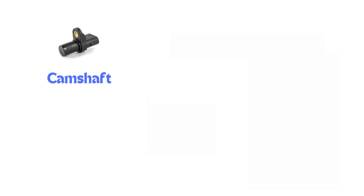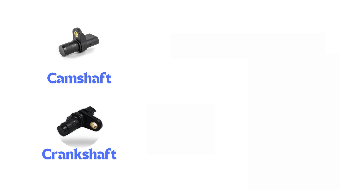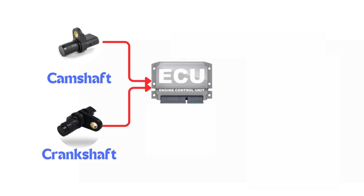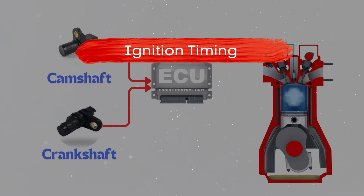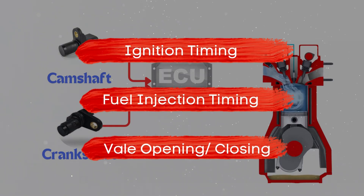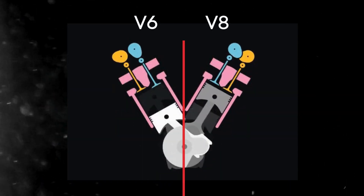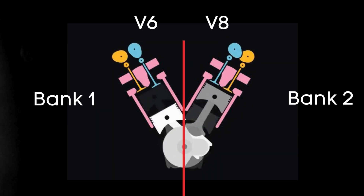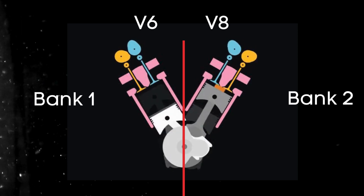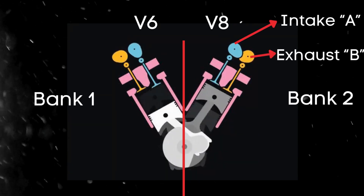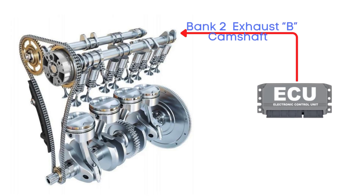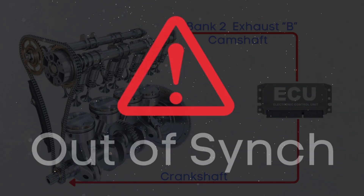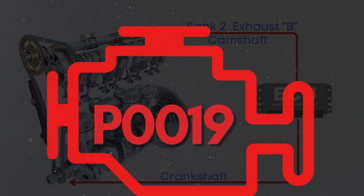The camshaft position sensor measures the position of the camshaft, while the crankshaft position sensor measures the position of the crankshaft. Both of these sensors send crucial data to the ECM, which uses this information to control ignition timing, fuel injection timing, and valve timing. In V6 or V8 engines there are two camshafts — bank 1 and bank 2. For dual overhead camshaft (DOHC) engines, there are two camshafts per bank: intake and exhaust. When the ECU detects that the bank 2 exhaust camshaft position and crankshaft are out of sync by a specific degree, it triggers the P0019 code.